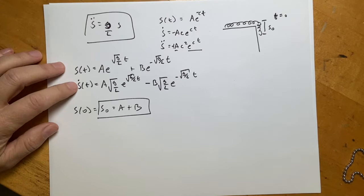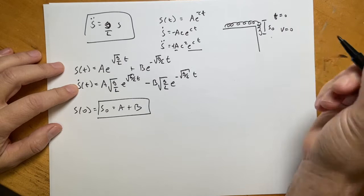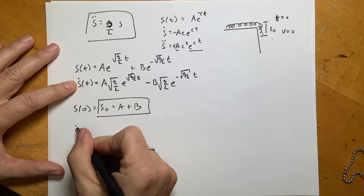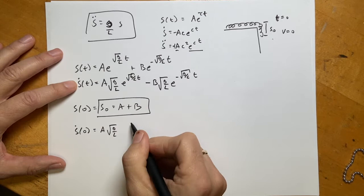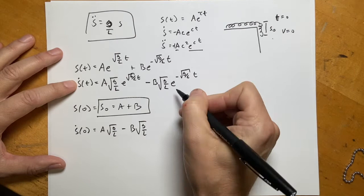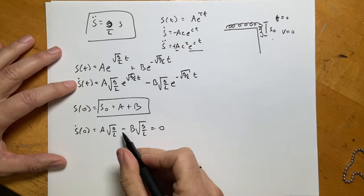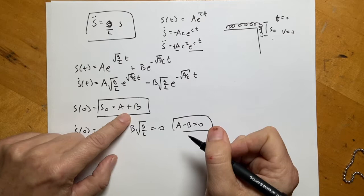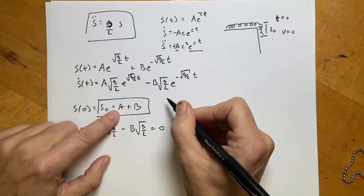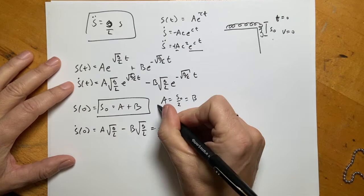I also know that at t = 0 the velocity is zero — I release it from rest. Setting ṡ(0) = 0 gives: A·√(g/l) − B·√(g/l) = 0, so A − B = 0, meaning A = B. Combined with A + B = s₀, we get A = B = s₀/2.